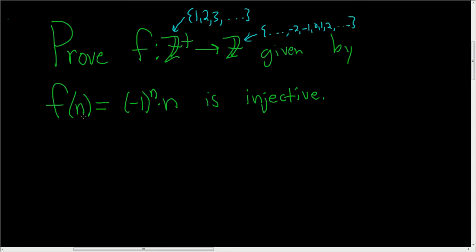The function is given by f(n) = (-1)^n · n. Recall that a function is one-to-one if whenever f(a) = f(b), then a = b.